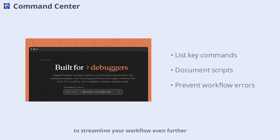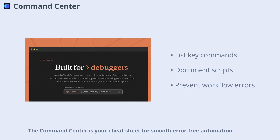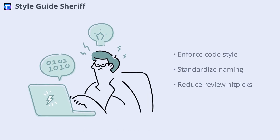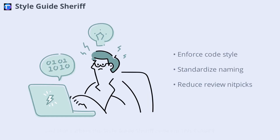Include tool versions or environment quirks if needed, and consider whitelisting safe commands to streamline your workflow even further. The Command Center is your cheat sheet for smooth, error-free automation. Consistency is key in any codebase, and that's where the Style Guide Sheriff comes in.